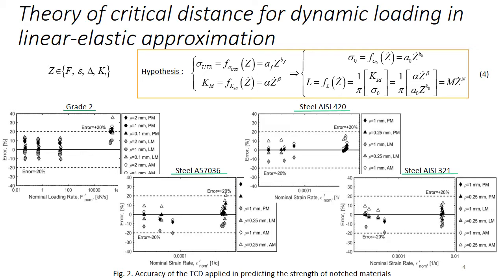The proposed modification of the theory has confirmed its effectiveness in predicting the dynamic strength on a wide class of notched metallic materials, resulting in estimates falling within an error interval of ±20%.